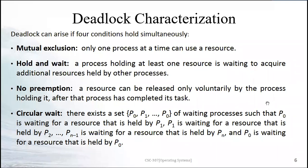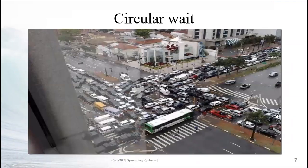Circular wait means process P0 is waiting for P1, P1 is waiting for P2, P2 is waiting back for P0. It doesn't have to be exactly P0 to P1 to P2 — the numbers can vary — but the idea is that one process is waiting for another which in return is waiting for another, and so on.